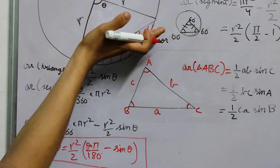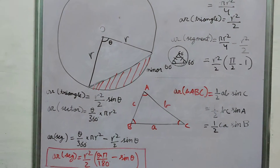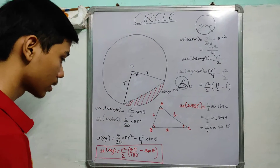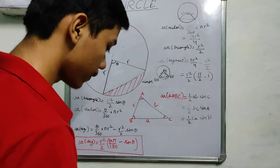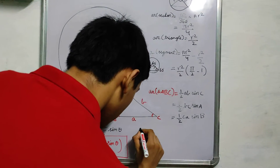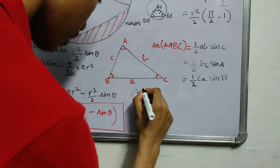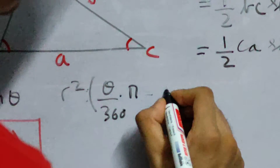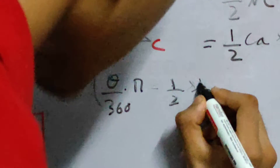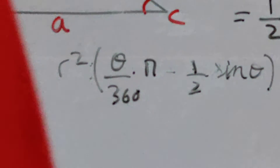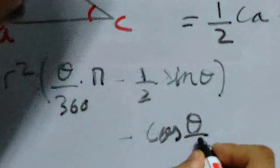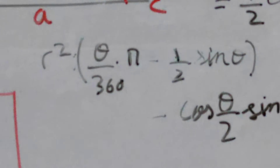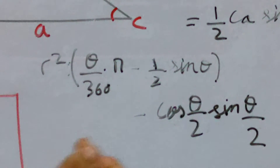To find the area of the other (major) segment, just subtract the minor segment area from πR². An important note: in many books, instead of writing ½·sinθ, they write cosθ/2·sinθ/2. These two expressions are exactly the same, and I'll show you why.